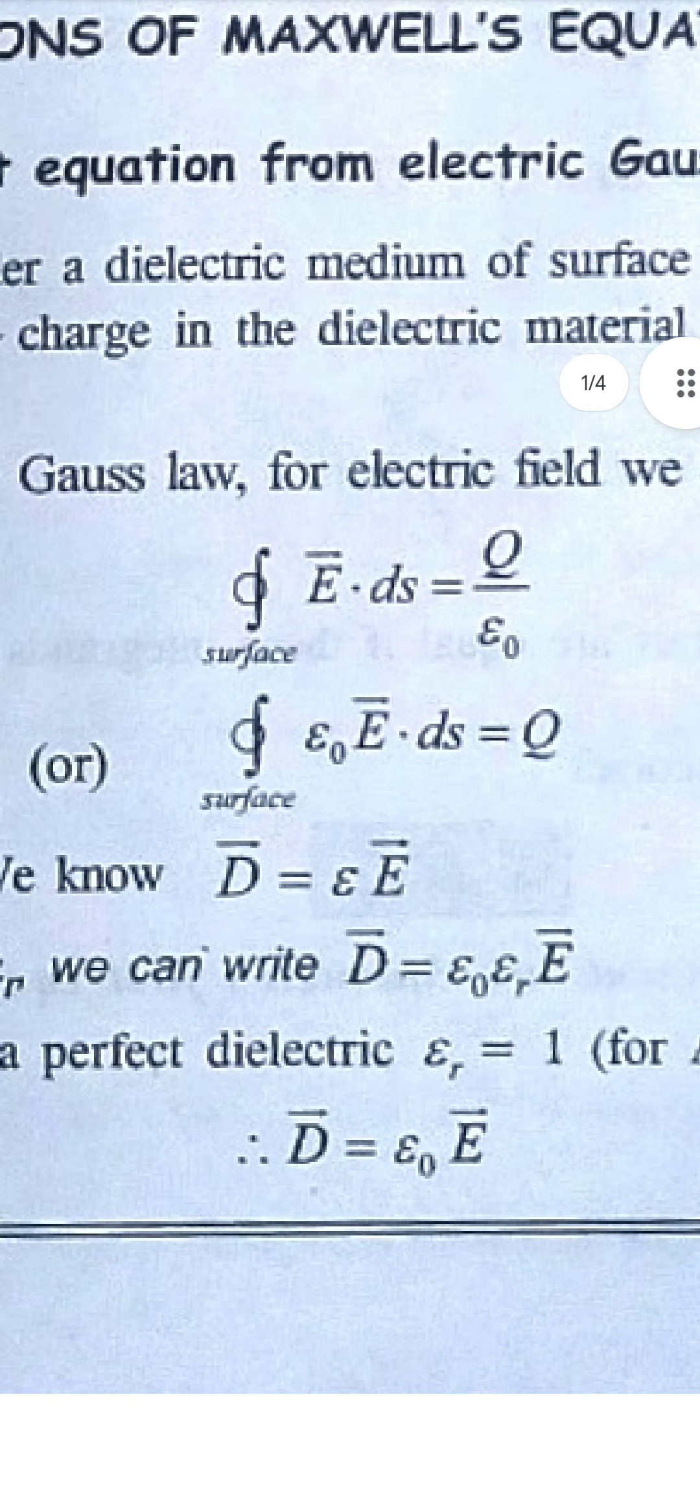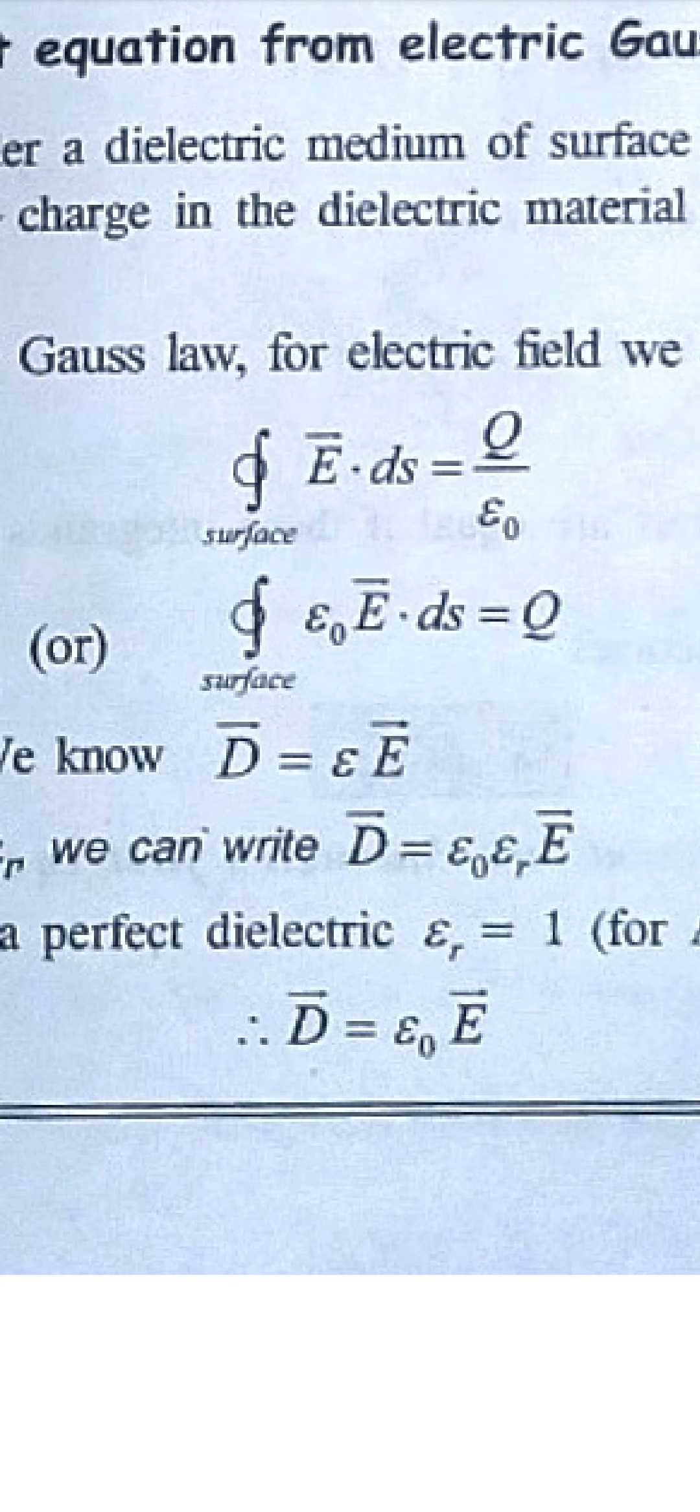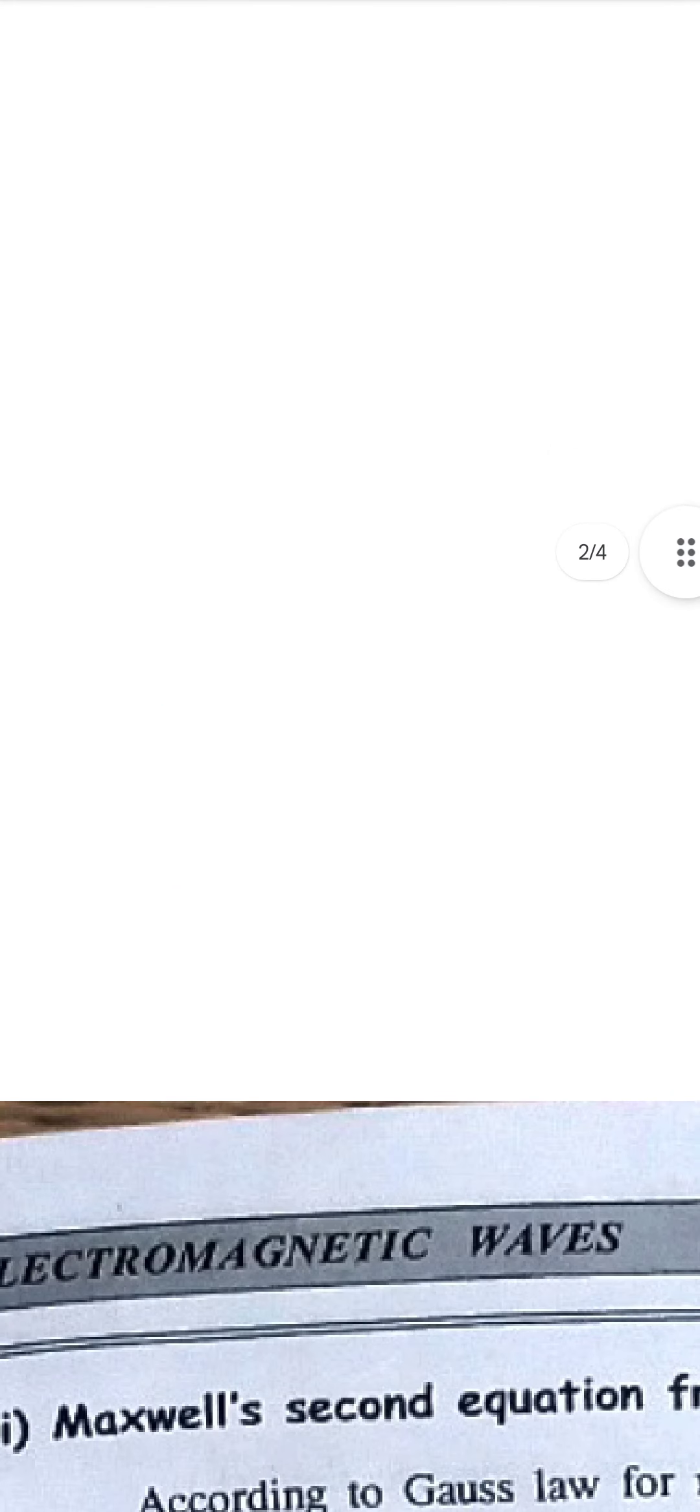The D vector is equal to epsilon E. If you write epsilon E, D vector is equal to epsilon E. For a perfect dielectric, epsilon r equals 1 for air, so D equals epsilon naught E.